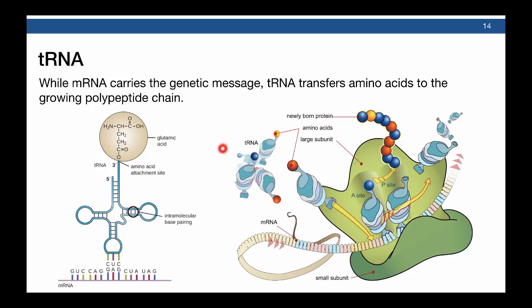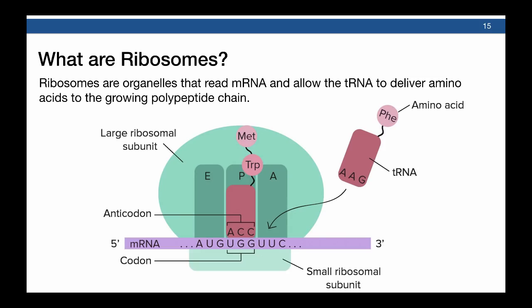The ribosome receives amino acids from the tRNA through three different sites. Ribosomes read messenger RNA and allow the transfer RNA to deliver amino acids to the growing polypeptide chain. The tRNA enters the ribosome through the A site, and its anticodon is matched to the codon in the messenger RNA strand. Once this occurs, the amino acid is transferred to the growing polypeptide chain. The transfer RNA then makes its way to the E site and is released. This process — by which the ribosome reads transfer RNAs by matching them to the appropriate codon and adding amino acids to a growing polypeptide chain — is known as translation.